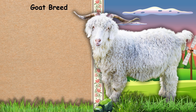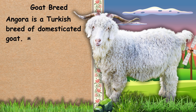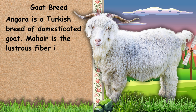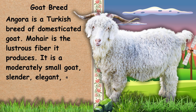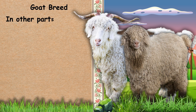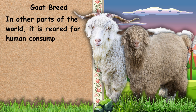And for the goat breed. First, we have Angora. Angora is a Turkish breed of domesticated goat. Mohair is the lustrous fiber it produces. It is a moderately small goat, slender, elegant, and light-framed. In other parts of the world, it is reared for human consumption.